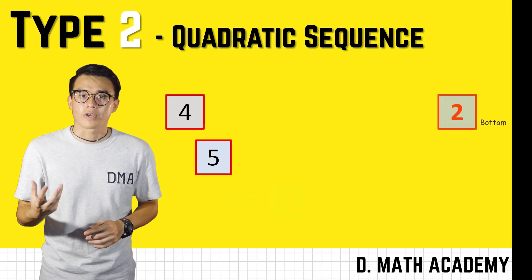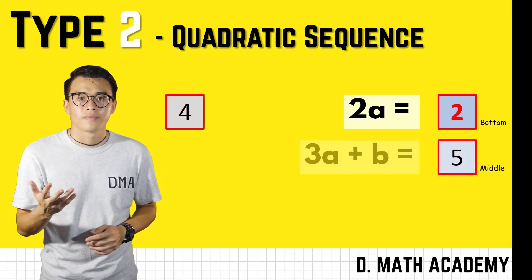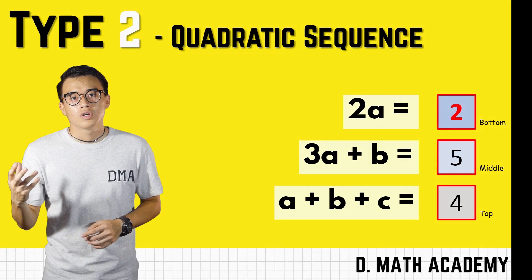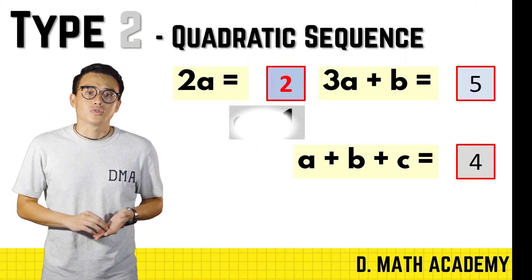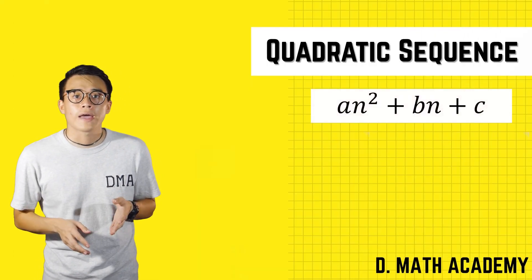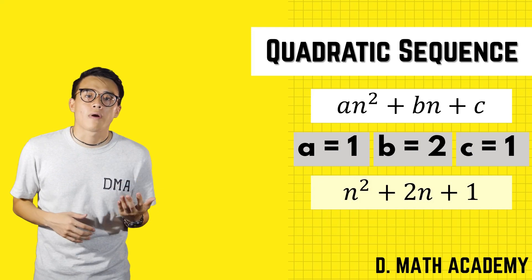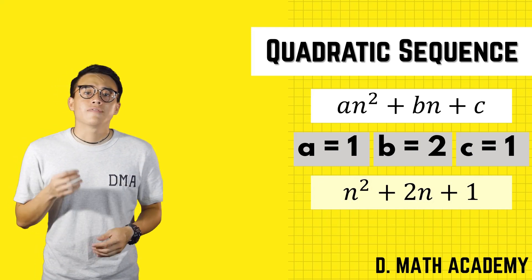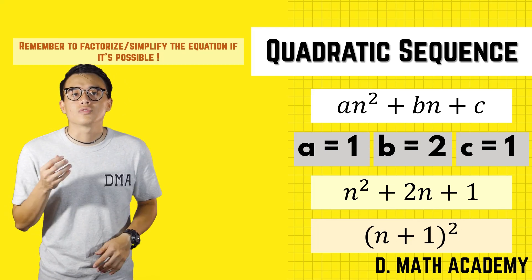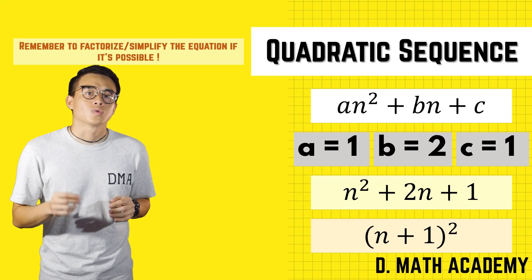Substitute into the specific formula: 2a equals the bottom row, so 2a equals 2; 3a plus b equals 5, which is the middle row; and a plus b plus c equals 4, the top row. Running the calculations gives a equals 1, b equals 2, and c equals 1. Substituting into a·n² plus b·n plus c, you get n² plus 2n plus 1.